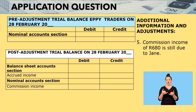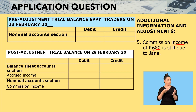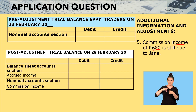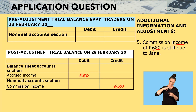The fifth adjustment reads: commission income of 680 is still due to Jane, who is the owner of the business. This is commission income that is due to us as a business. In the nominal account section of the pre-adjustment trial balance, there was nothing recorded, so when we come to the post-adjustment trial balance, we have accrued income — income that we are still to receive. We debit accrued income 680, and commission income becomes 680 on the credit side, because all income is credited in the trial balance.